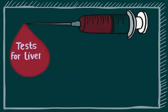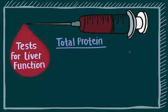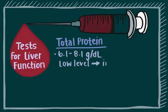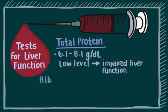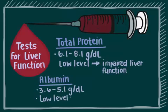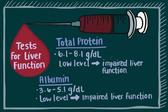Tests for liver function include measuring the levels of total protein and albumin. Total protein: normal range is 6.1 to 8.1 grams per deciliter. Low levels may indicate impaired liver function. Albumin: normal range is 3.6 to 5.1 grams per deciliter. Low levels may indicate impaired liver function.